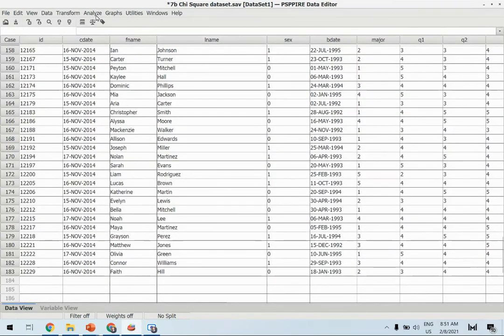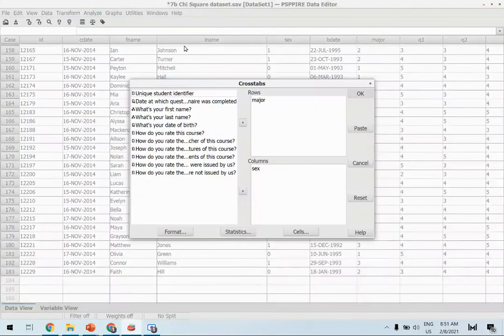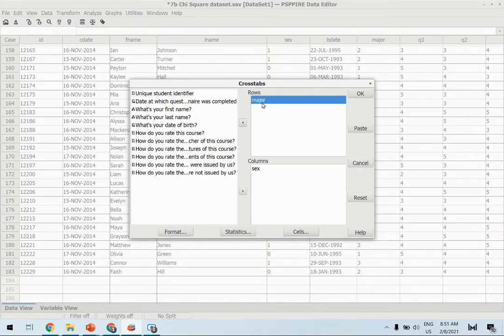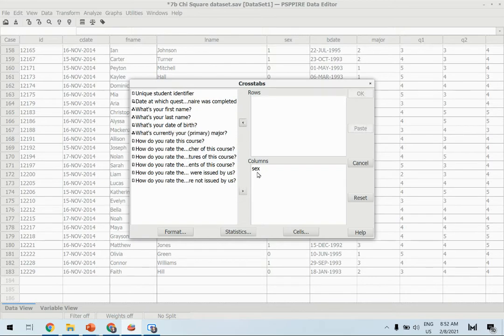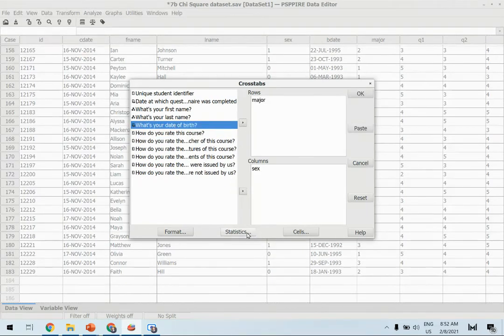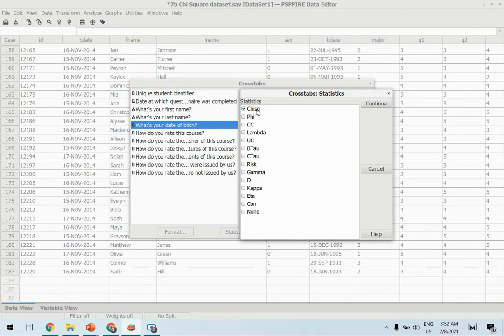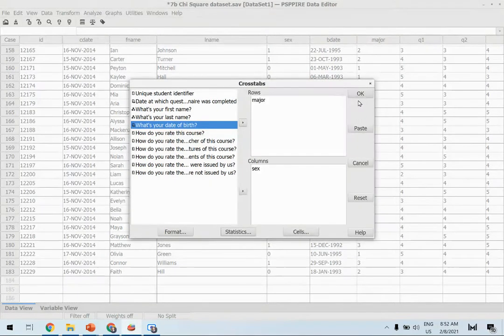Let's go to Analyze, Descriptive Statistics, and Crosstabs. Choose major under rows and choose gender under columns. And under Statistics, we are going to choose chi-square. Choose chi-square, continue, click OK.